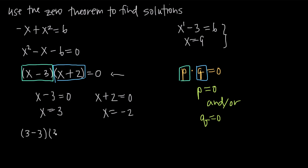Simplifying with x equals three, I get zero times five equals zero. Well, zero times five is just zero, so I get zero equals zero, and that checks out.